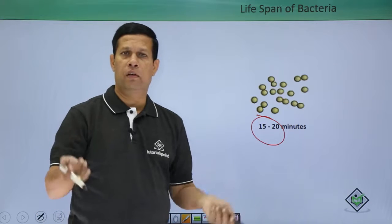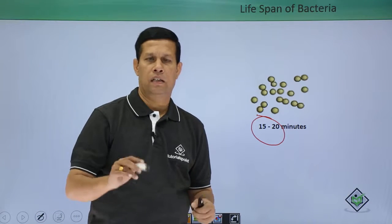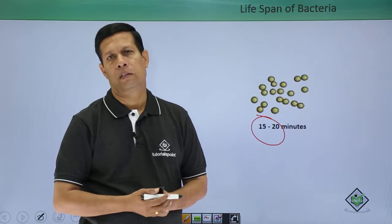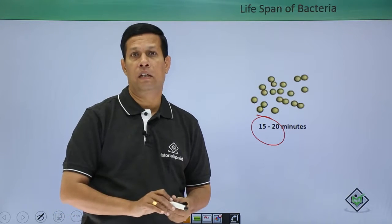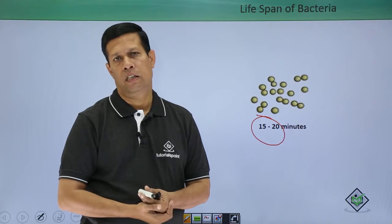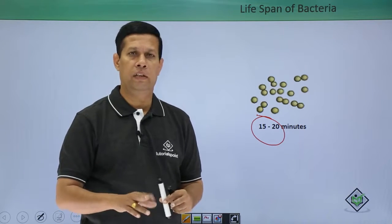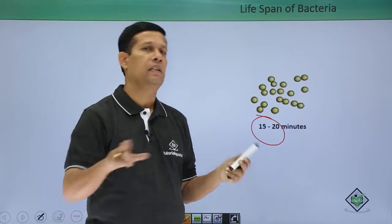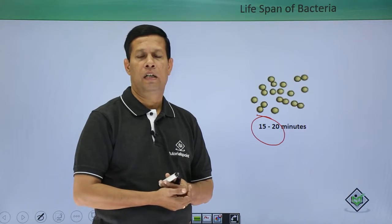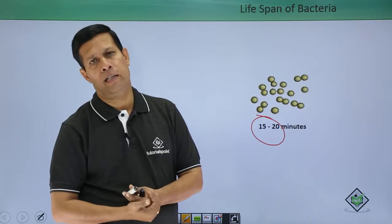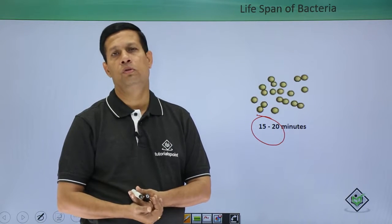Once in every 20 minutes, every bacterium produces another new bacterium. Here the process involved is cell division. The bacterial cell division is different. The parent cell divides and forms directly two new bacteria.